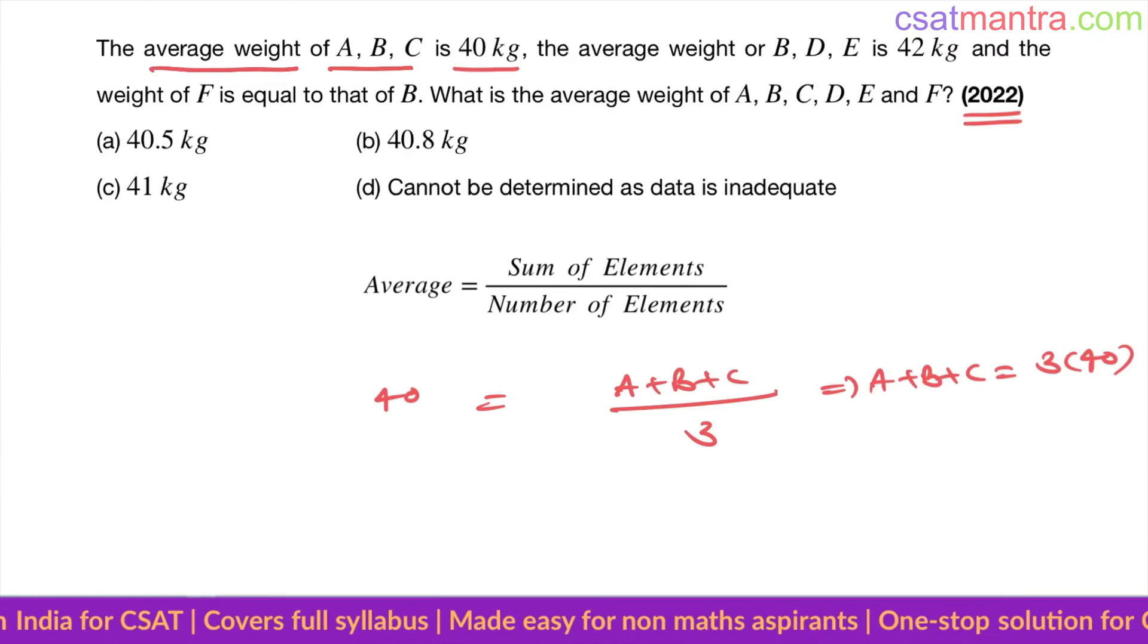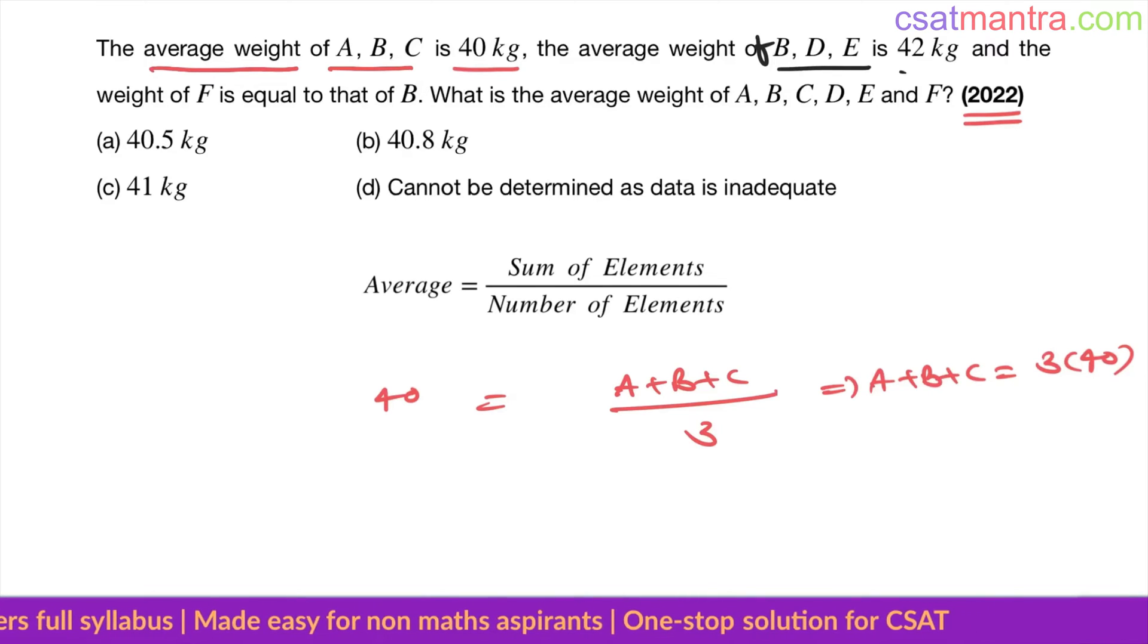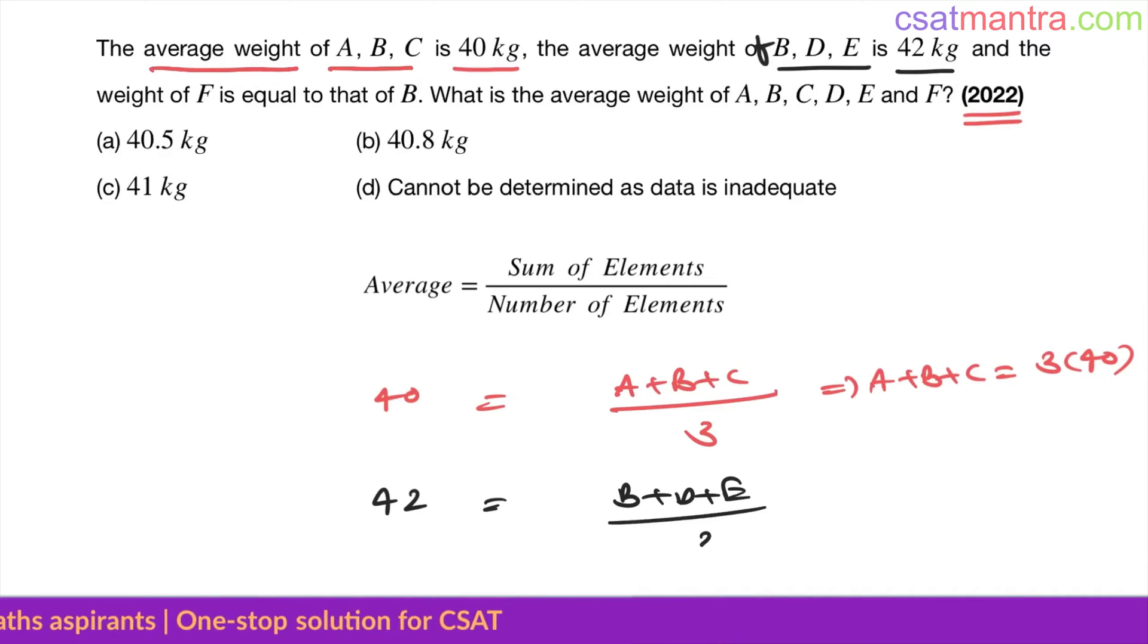The average weight of B, D, E is 42 kg, okay. So 42 is equal to B plus D plus E divided by 3. So B plus D plus E is equal to 3 into 42.